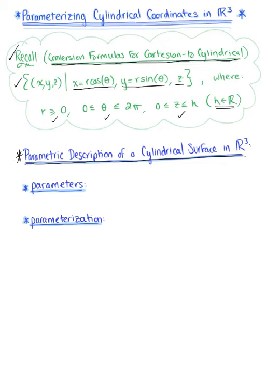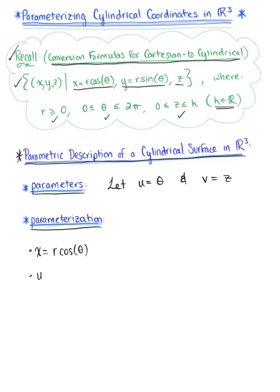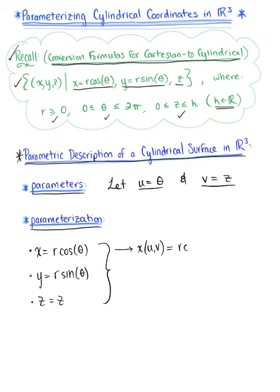Keep in mind that we need a two-parameter description for our surface. Our parameters will be: we're going to let u be theta, and we're going to let v define z. We use these two parameters to redefine the parameterization of a cylindrical surface. From our Cartesian coordinates, x is defined as r cosine theta, and y is defined as r sine of theta. So our parametrized x in terms of the new parameters u and v is going to be r cosine of u.